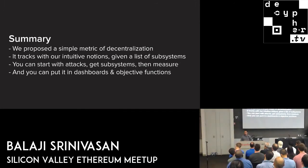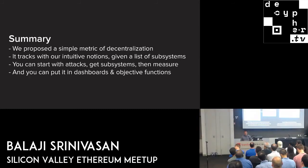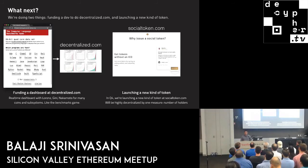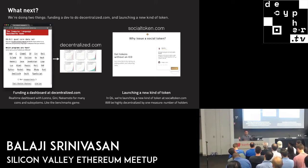Just a summary: we propose a simple metric of decentralization that tracks with our intuitive notions. Given a list of subsystems, you start with the attacks, get subsystems that correspond to those attacks, then measure the Nakamoto coefficient for each one. Once you've got this, you can start putting it in dashboards and objective functions. We'd be happy to fund a developer to build something at decentralized.com — something like the benchmarks game with Lorenz, Gini, and Nakamoto coefficients for many different coins and subsystems, where each person can check off the metrics they think are most important and use that to argue on Twitter or Reddit. This starts to quantify something that all of us know is important.